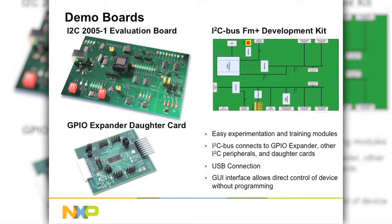The I2C bus FM Plus development kit and associated GPIO daughter cards provide a quick way to learn about the devices and the I2C protocol. The cards are modular so they may increase design flexibility while providing easy access to the expander's I/O pins. The board supports a maximum I2C bus speed of 1 MHz.